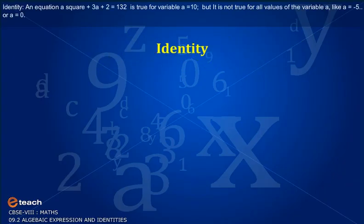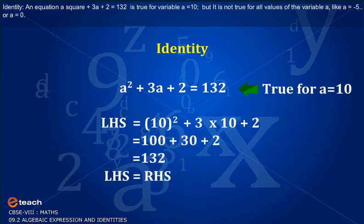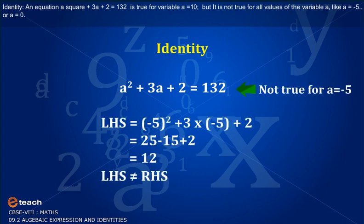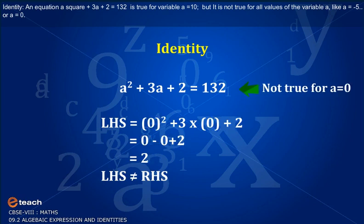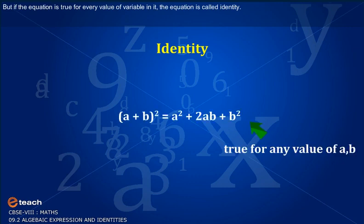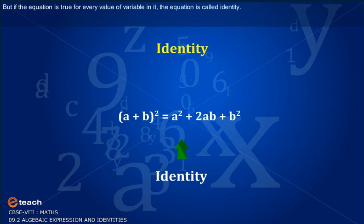Identity. An equation such as a squared plus 3a plus 2 equals 132 is true only for a particular value of a, like a equals 10, but not for all values such as a equals minus 5 or a equals 0. But if an equation is true for every value of the variable in it, the equation is called an identity.